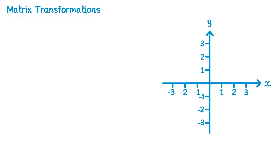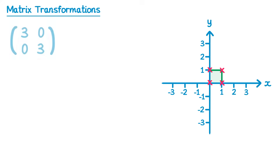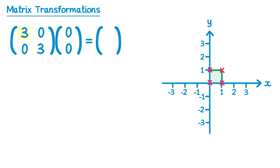Now let's return to the coordinate axes. If we mark on the points (0,0), (0,1), (1,1), and (1,0) and join them up, we form a square. Since this square has side length 1, it's known as the unit square. You need to be aware of various transformations of the unit square. We'll start with the transformation represented by the matrix [3 0; 0 3]. Transforming the point (0,0): 3×0 + 0×0 = 0 and 0×0 + 3×0 = 0, so (0,0) transforms to itself — it doesn't move.